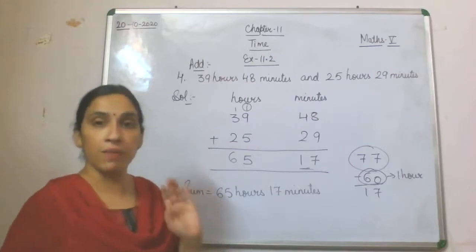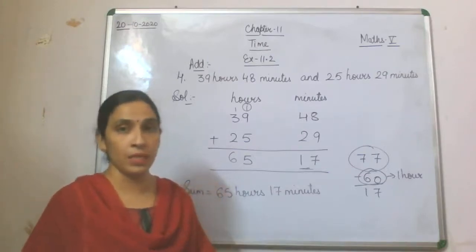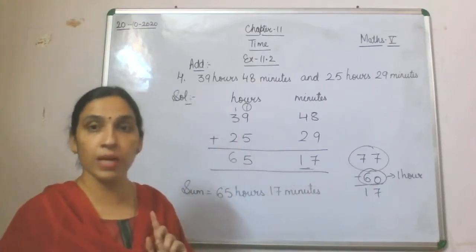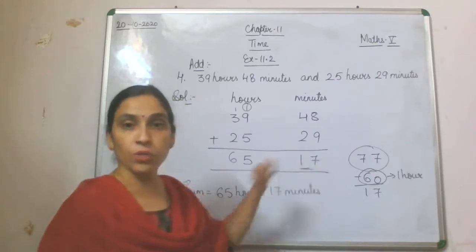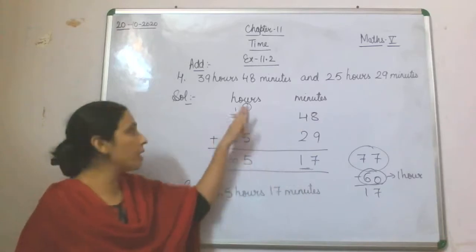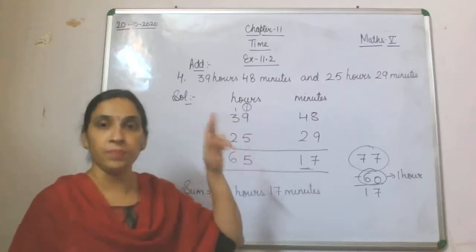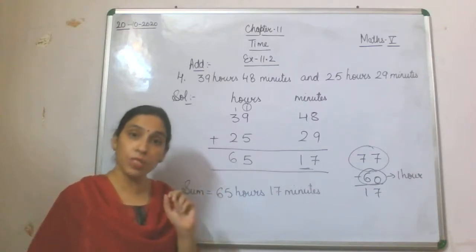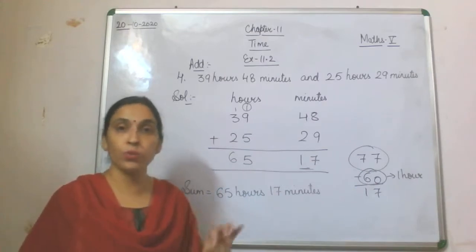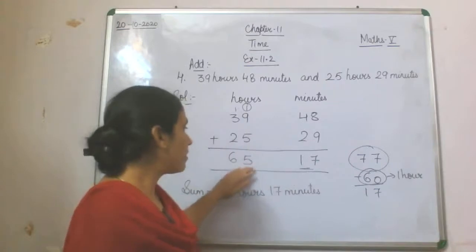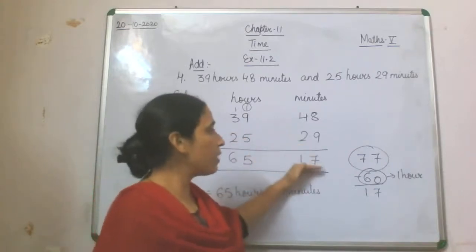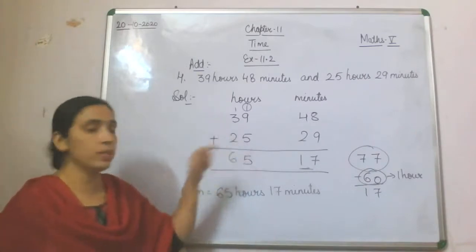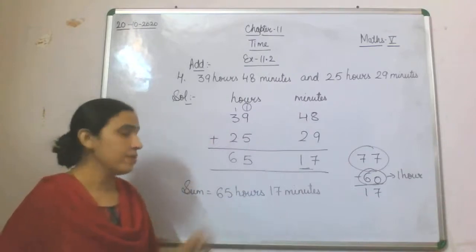Whenever you are doing addition of hours and minutes and the total is more than 60 — let's say it is 61 — you are going to take 60 from that 61. So 1 will be left in the minutes column, and that 60 minutes becomes 1 hour added to the hours column. It doesn't matter if you have more than 70 or more than 80 — if you have more than 60, you always take out 60, keep the remainder in minutes, and carry 1 hour. So here on the hours side the total is 65, and you are left with 17 minutes.